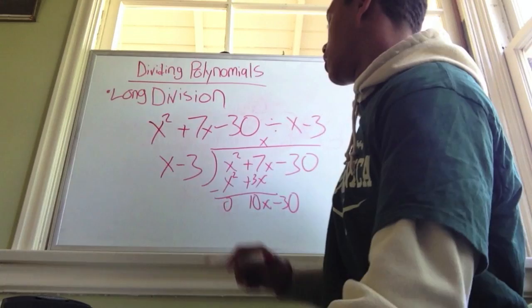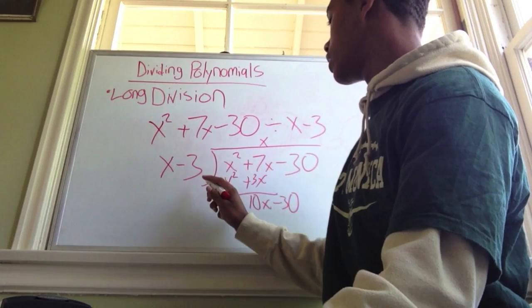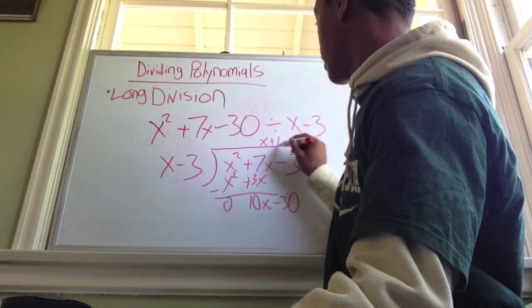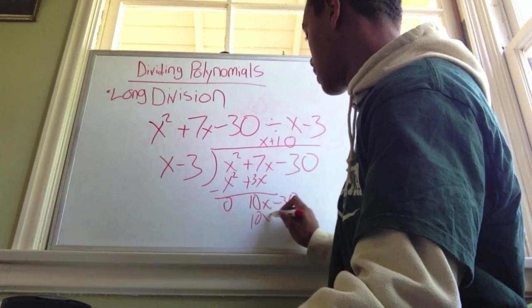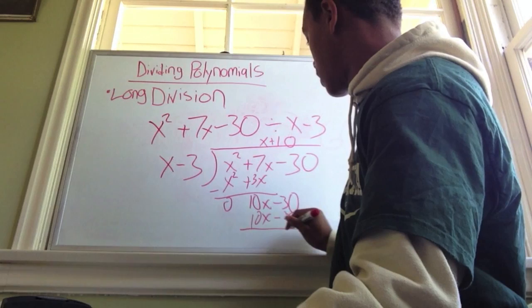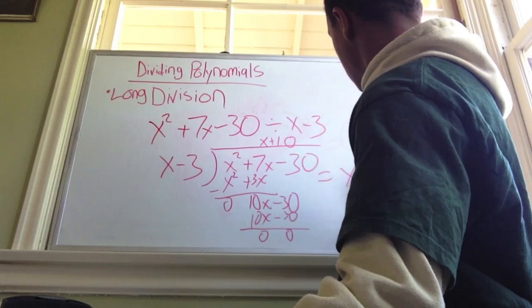That's going to cancel out to 0, and this is going to give you 10x. You bring down the minus 30. You want to find out what equals 10x, so you get 10 — because 10 times x equals 10x. So you put plus 10 at the top. Multiply 10 and x to get 10x, and then 10 and negative 3 to get negative 30. The answer is x plus 10.